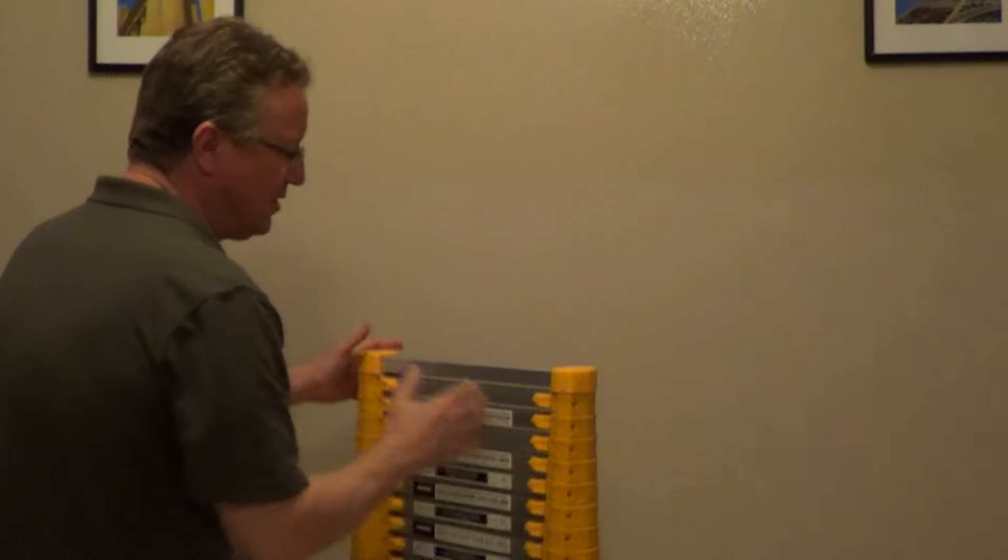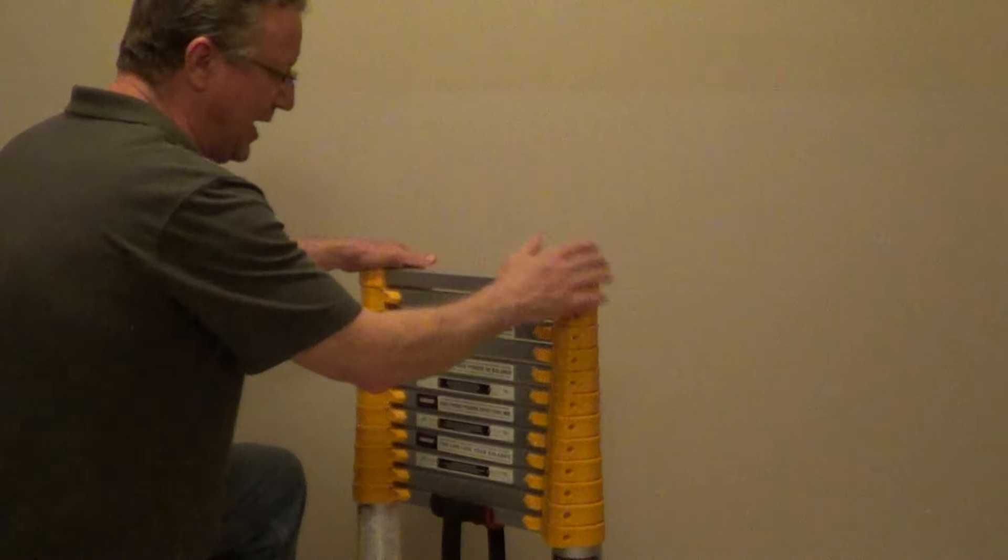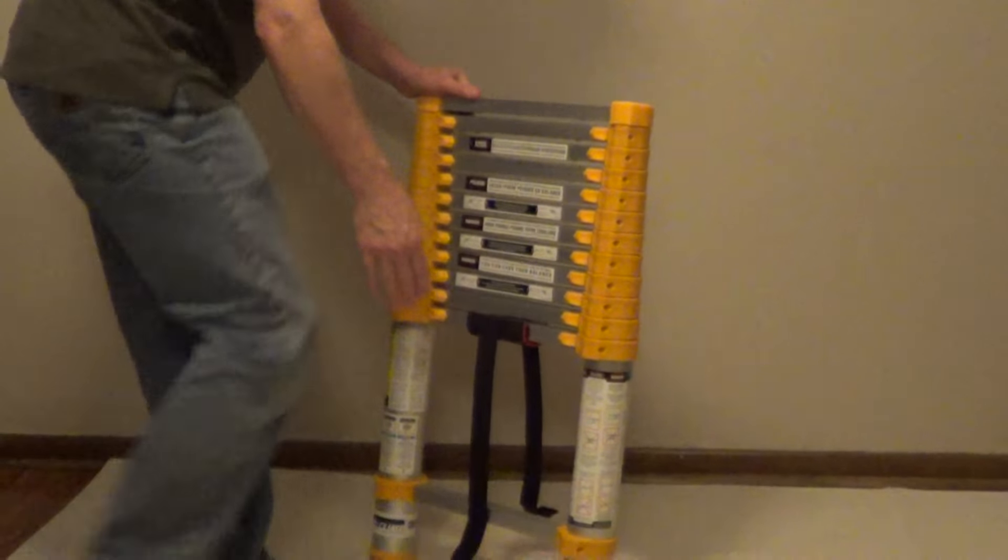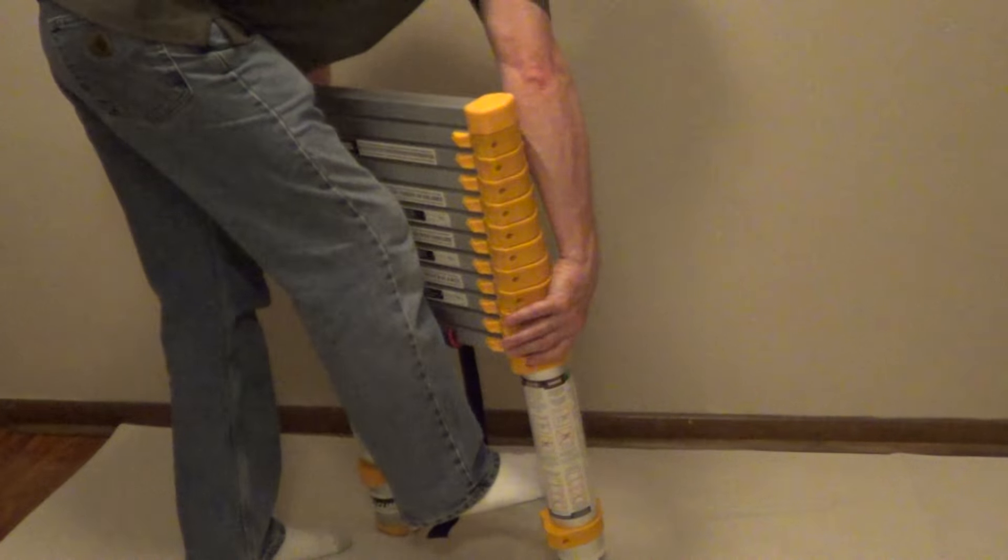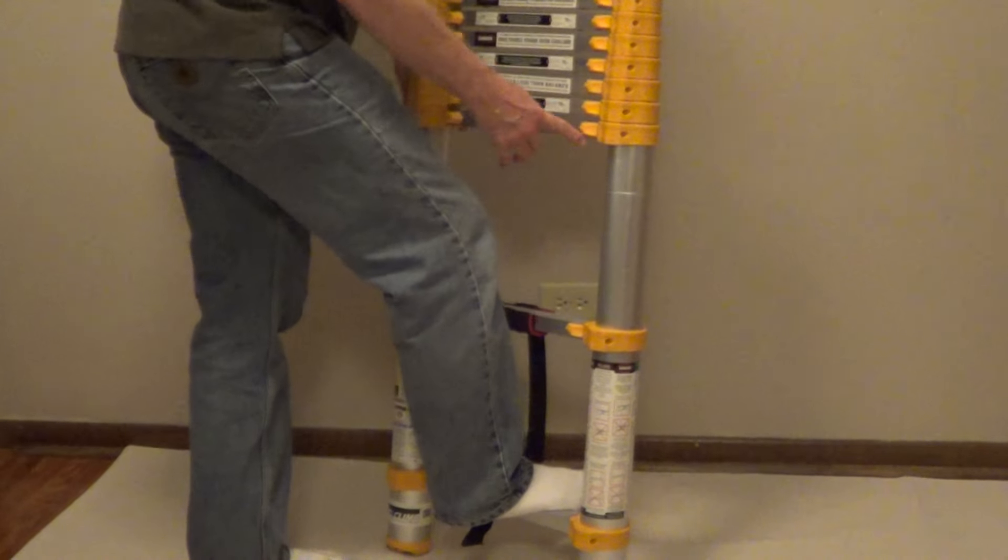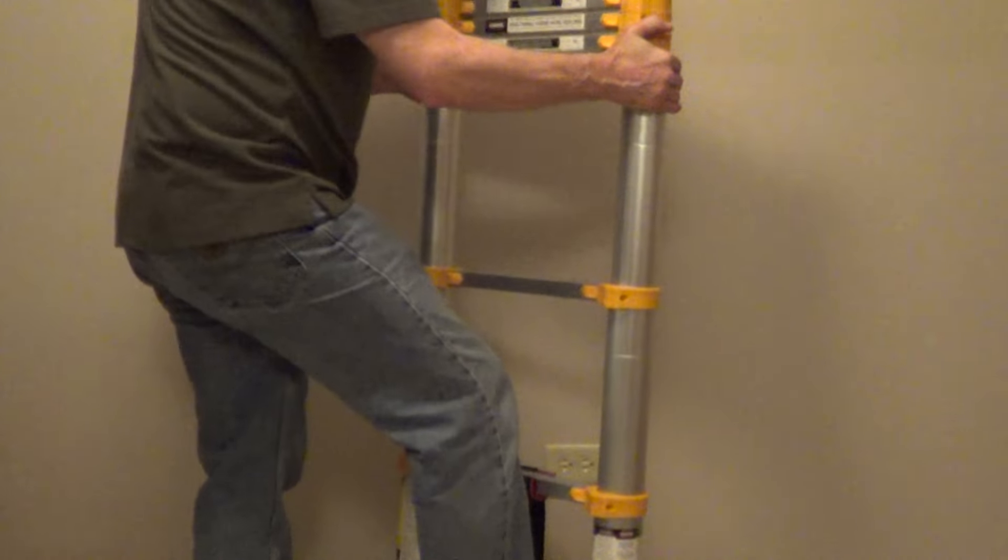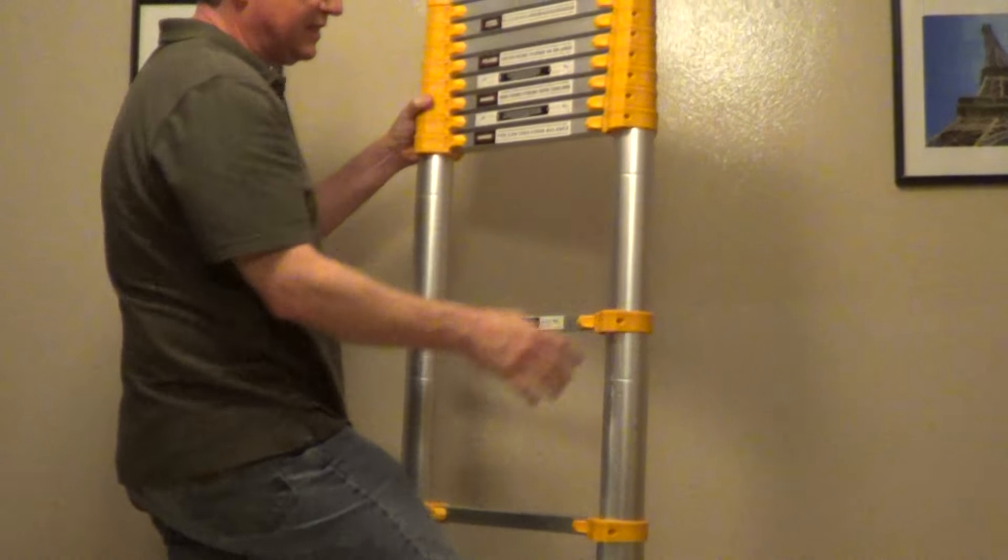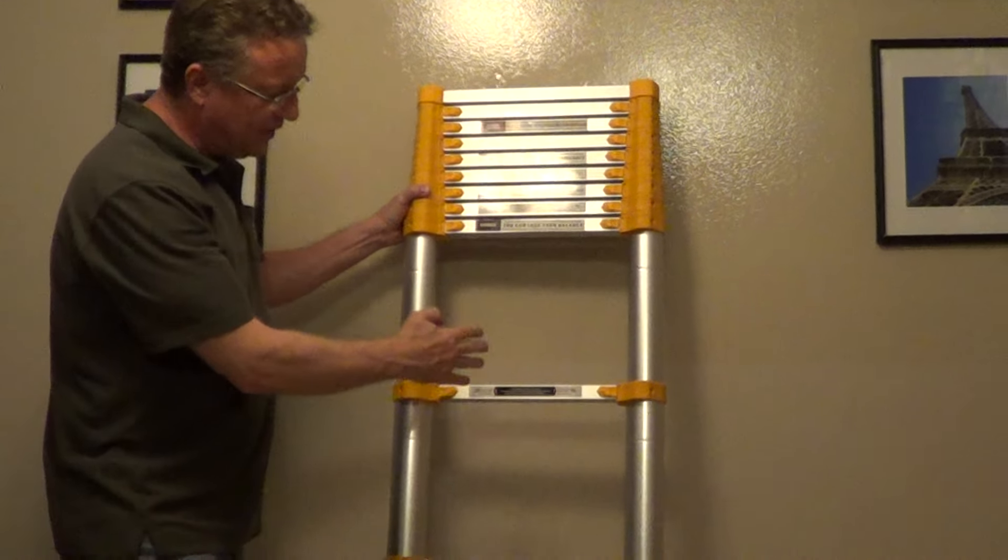If you're doing a project and you're not going to extend this to its full height, you want to start from the third rung up. Put your foot on the bottom rung, grab the third rung, and extend this until it locks. Then you're going to go up one rung at a time, making sure that these are all fully extended.